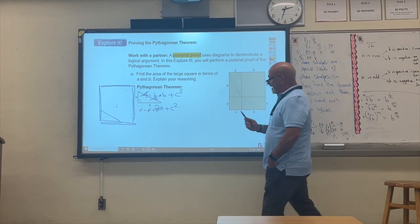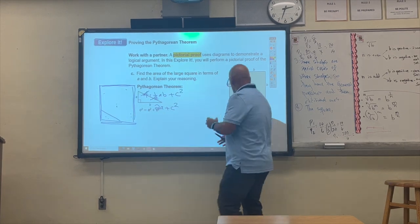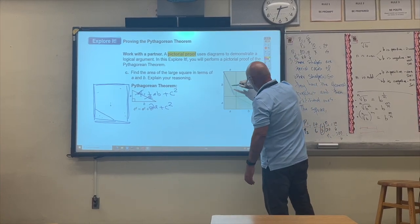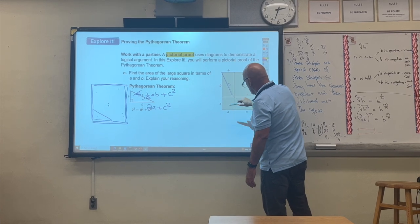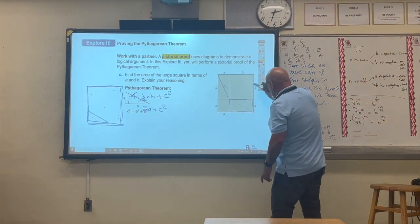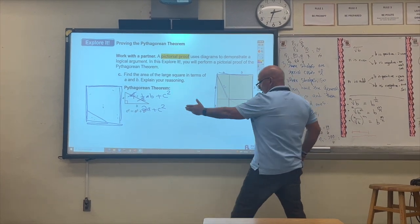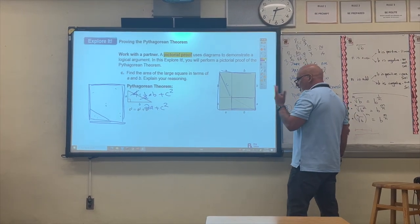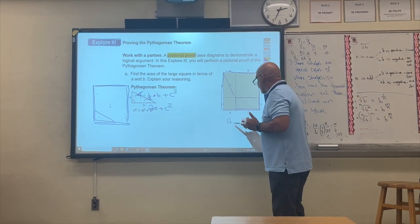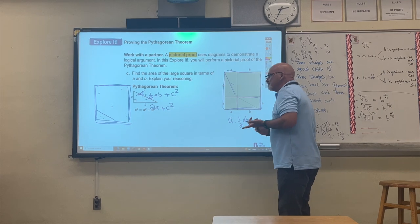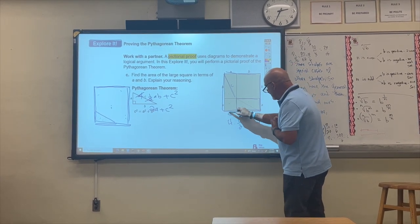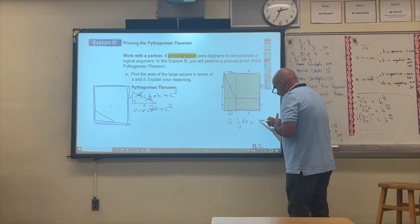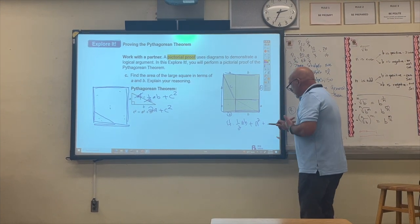Suppose I cut the triangles and rearrange them so that this side is C, this one is A, and this one is B — and the same on the other side. This is the same square we discussed, but now we calculate the area with the information at hand. There are four triangles again: 4 times one-half times A times B, and we also have one square with side A and another with side B. So the total is 2ab plus A squared plus B squared.